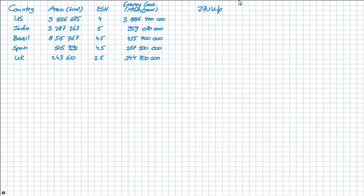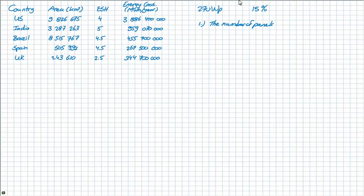Moving on to the second question. It asks the percentage of US area that you would need to cover to supply its annual energy demand if the solar panels have an efficiency of 15%. To calculate this, you need to know two things: first, the number of panels you would need to supply the annual energy demand, and second, the area per panel. So let's start with the number of panels. To calculate the number of panels needed, we need to know the yearly energy output per panel first.